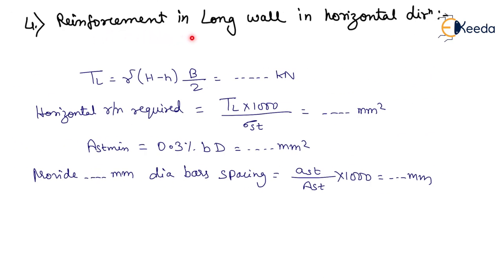Step 4: Reinforcement in long wall in horizontal direction. Direct tension force transferred by short wall on long wall is TL equals gamma (H minus h) into B by 2, in kilonewtons. Horizontal reinforcement required equals TL into 1000 divided by sigma ST, in mm². Calculate AST minimum equals 0.3% of B into D, in mm². Provide bars at spacing of (small AST upon capital AST) into 1000, in mm.